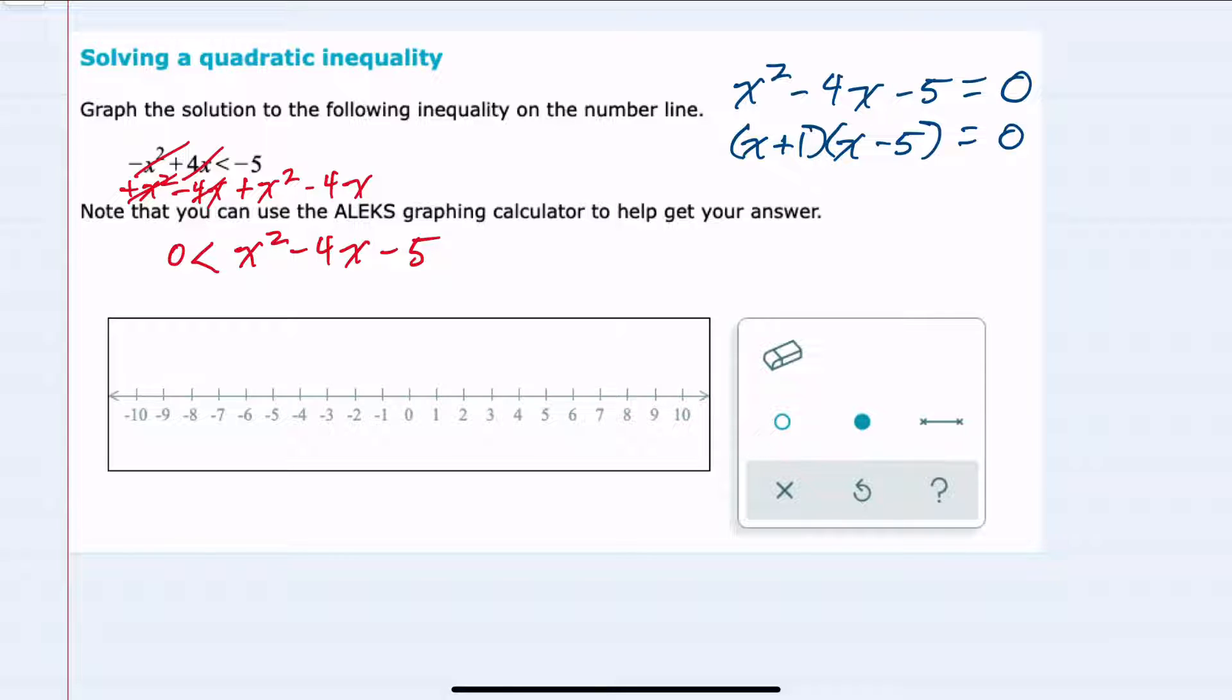Now that I have two factors being multiplied to equal zero, I know that either the first one, x plus 1, would have to be zero—this happens when x equals negative 1—or the second factor, x minus 5, would have to be 0, and this happens when x equals a positive 5.